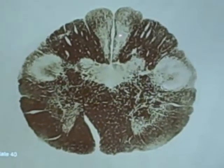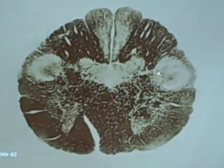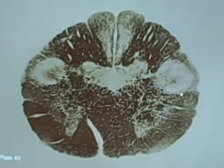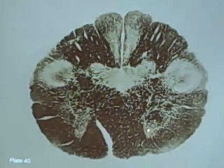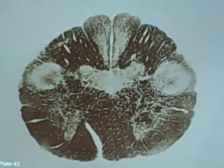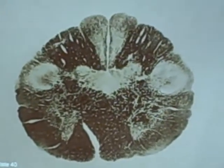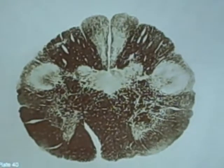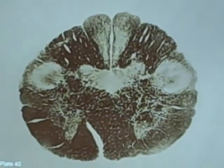The nuclei again are gracilis, cuneatus, and substantia gelatinosa. And out here, again, the accessory. Remember when we went through these lectures, I stopped mentioning the spinal thalamic tract and the spinal cerebellar tract — that's because they all kind of merge into a hazy area out here. I want you to get the big picture.